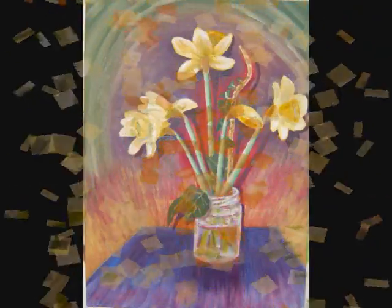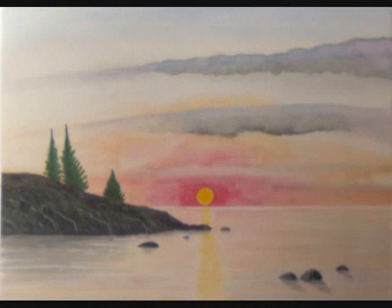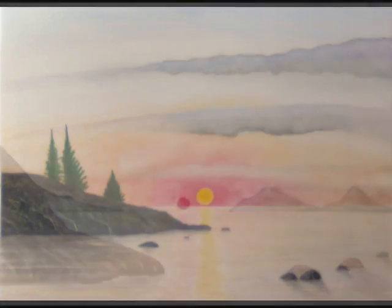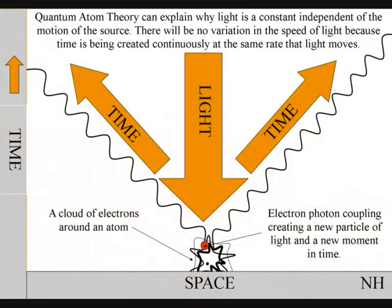In this way, creation is being created continuously. Because this is a continuous process at the same speed that light moves, the wave function of light between the atoms will always be a universal constant, independent of the motion of the source.